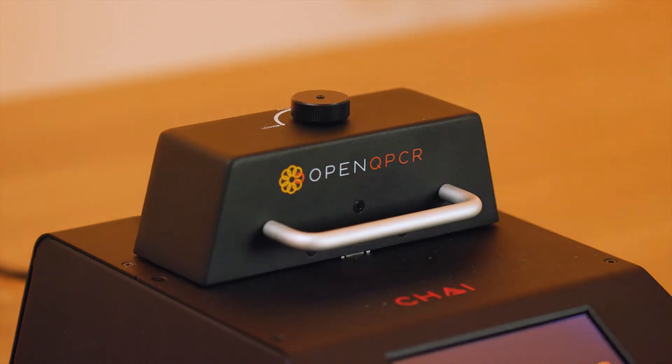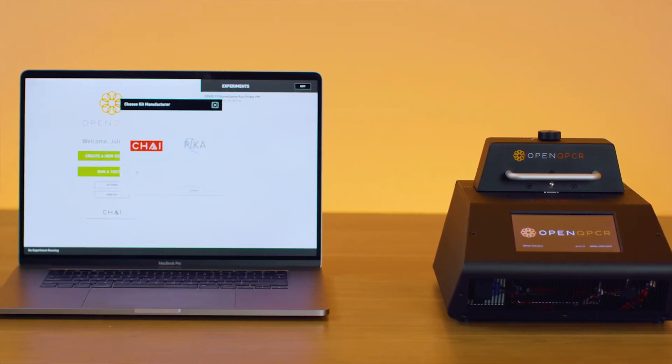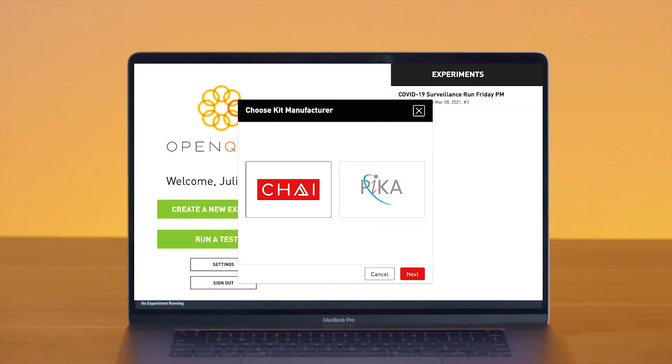Now that your samples are loaded, let's start the run. Just launch your browser, select the COVID-19 surveillance test kit, name your samples, and hit start.